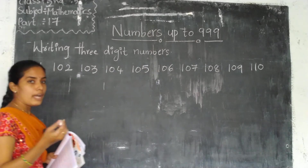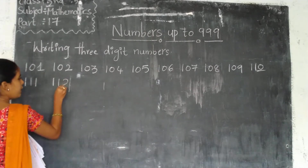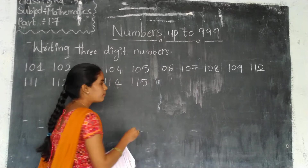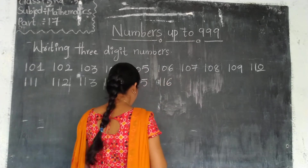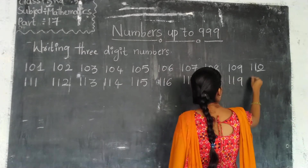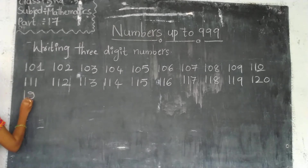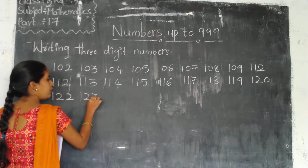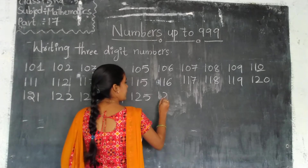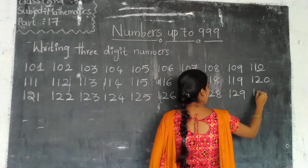After 110, we have to change the tens digit from 10 to 11. So 111, 112, 113, 114, 115, 116, 117, 118, 119, and 120. After 120 is over, next: 121, 122, 123, 124, 125, 126, 127, 128, 129, and 130.